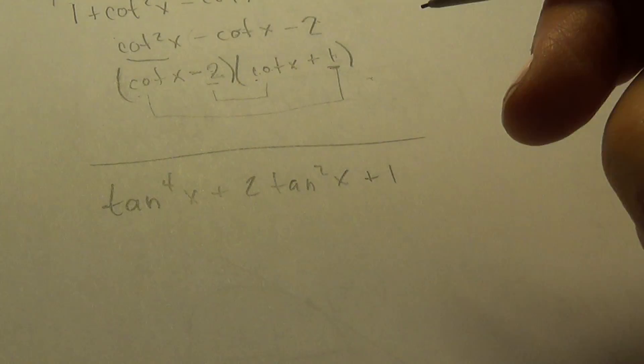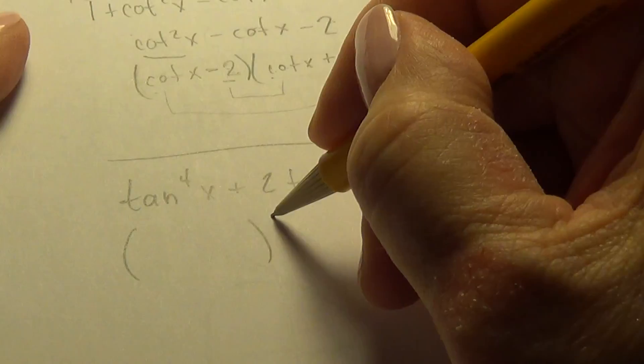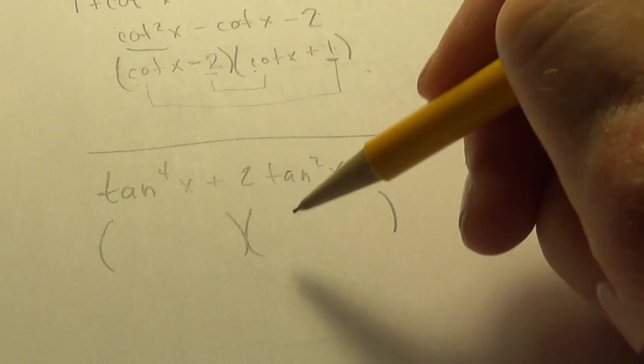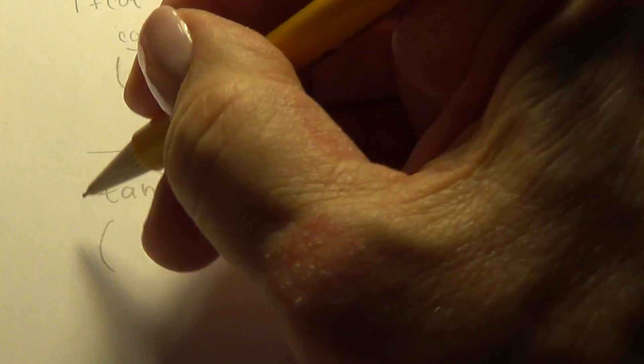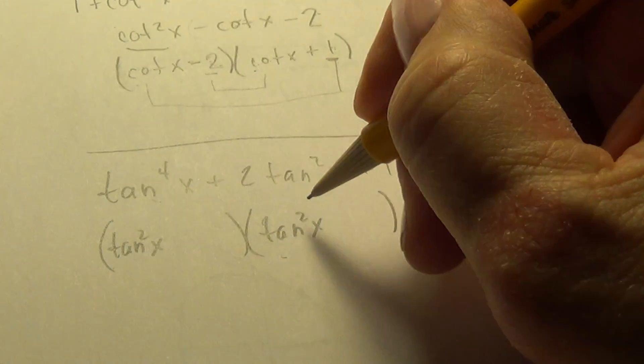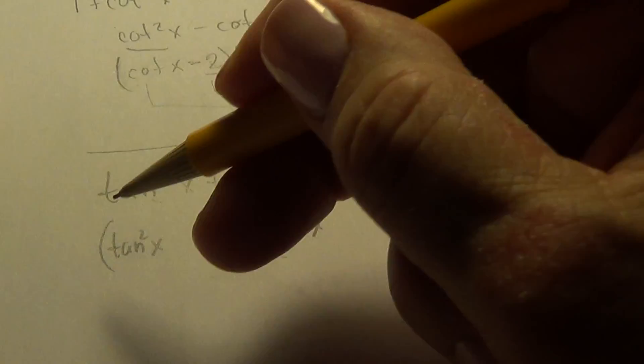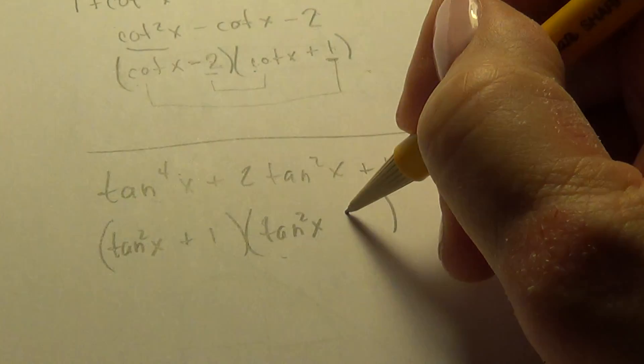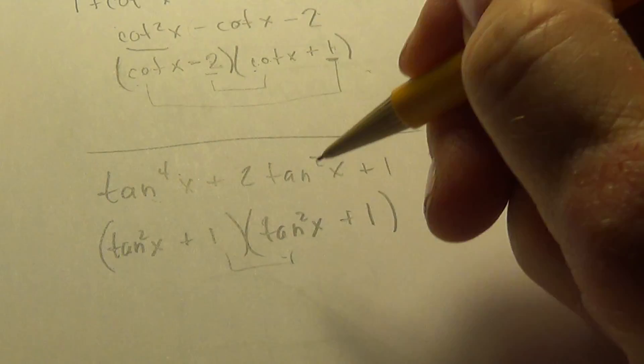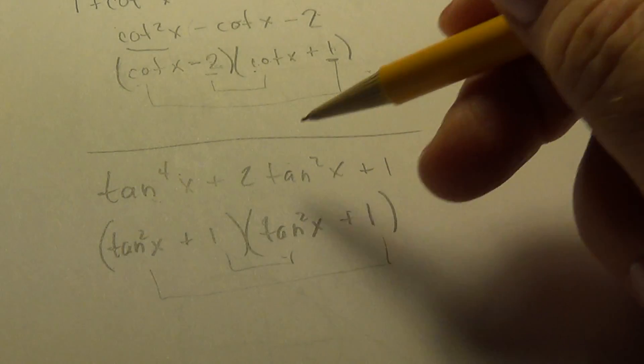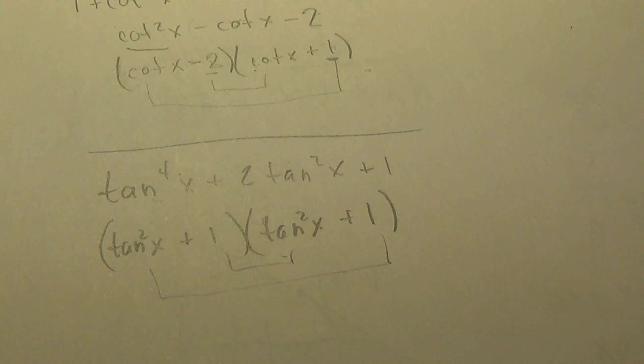All right. So I'm going to use regular foil type factoring. And I see that the first times the first is probably going to be tangent squared times tangent squared. And that would give me a tangent to the fourth, first times first. And the last times the last is going to be a one. Let's check the inner product. One tangent squared outer. One tangent squared. They add to give me two tangent squared. So I have factored it.